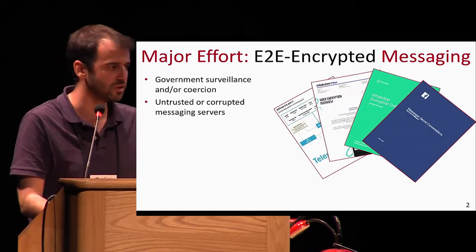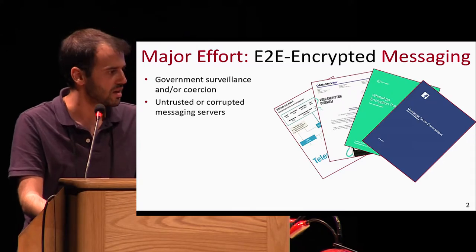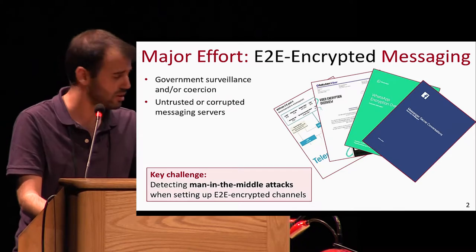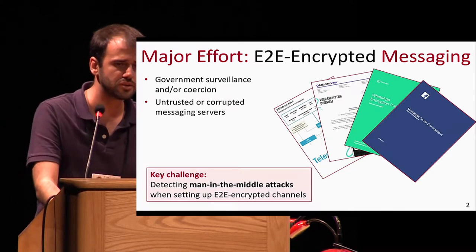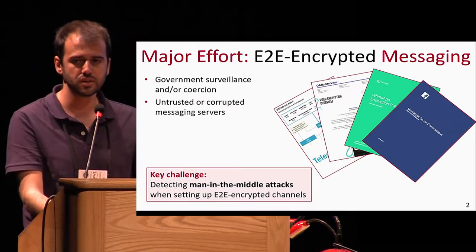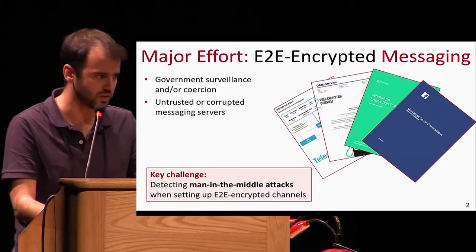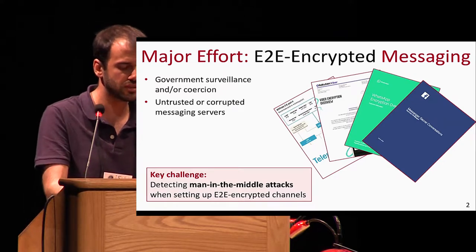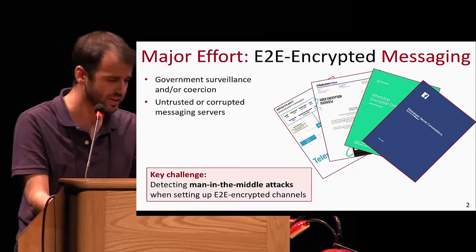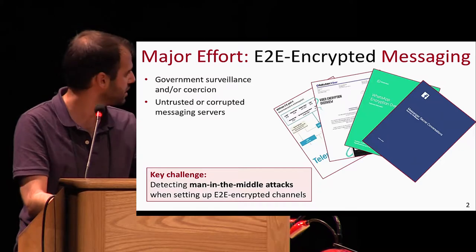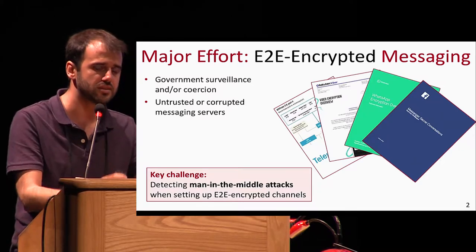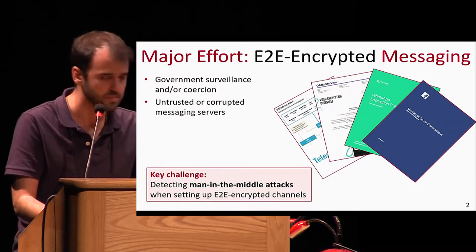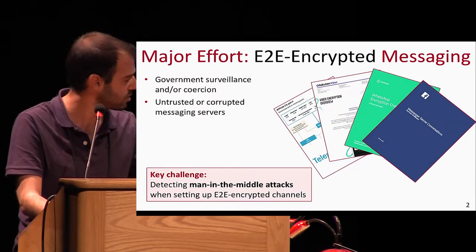We heard in the last couple of talks about end-to-end encryption in messaging applications. Note that by now, if a pair of users has already established a shared secret key, then very roughly speaking, end-to-end encryption is kind of figured out, at least in its most basic form. So a key challenge is that of detecting man-in-the-middle attacks when trying to set up secure end-to-end channels — what was referred to as the initialized part of the protocol in previous talks.